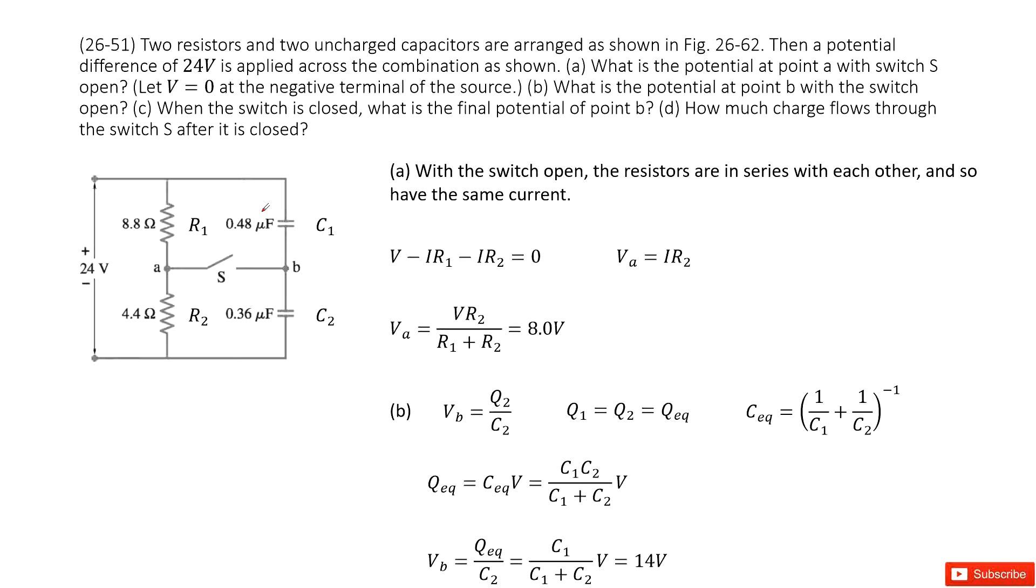Chapter 26 is about DC circuits. When we look at these circuits, we have two resistors and two capacitors, and then we have a switch to connect point A and point B. The potential difference between these two points is 24 volts.